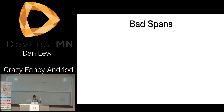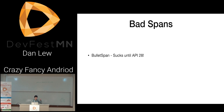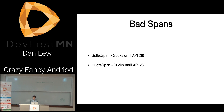Some built-in spans are bad. The BulletSpan is defined as a two-pixel circle — not two density-independent pixels, two actual pixels. This made sense on the T-Mobile G1, but with high-resolution density screens now it makes no sense. Someone finally changed BulletSpan in API 28 so you can define the size of the bullet, but it was basically invisible before that. The QuoteSpan has the exact same problem — you can't customize anything, it's a one-pixel line — until API 28.